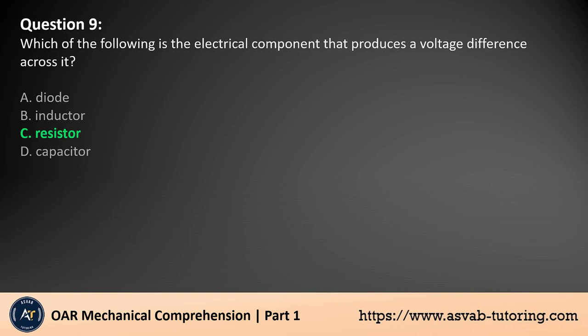The answer is C. A resistor is an electrical component that creates a voltage difference across its terminals when current flows through it. The resistor opposes the flow of current, and according to Ohm's law, V = IR, the voltage across the resistor is proportional to the current passing through it and the resistance value. This voltage drop is essential in controlling the current and voltage in electrical circuits.